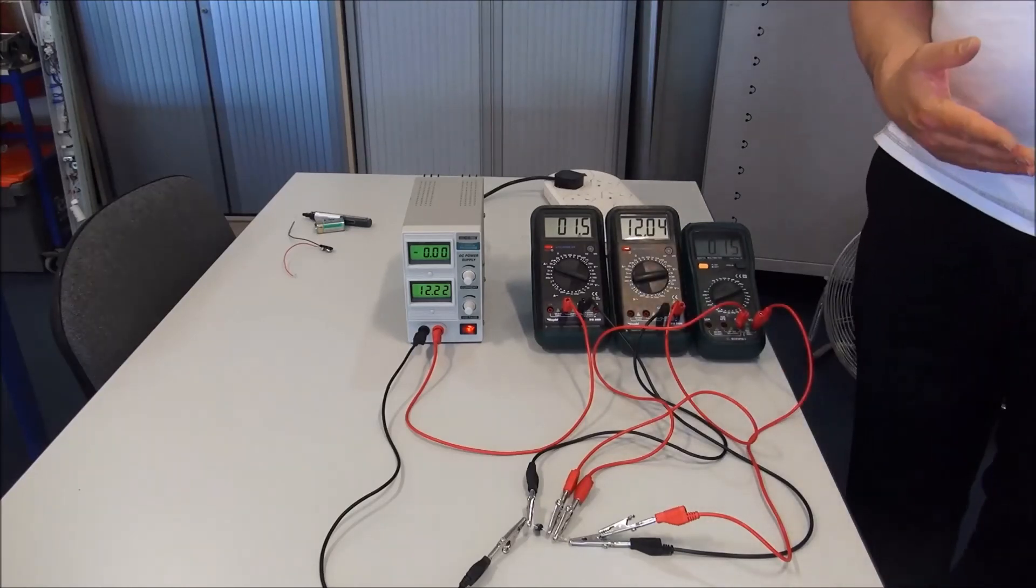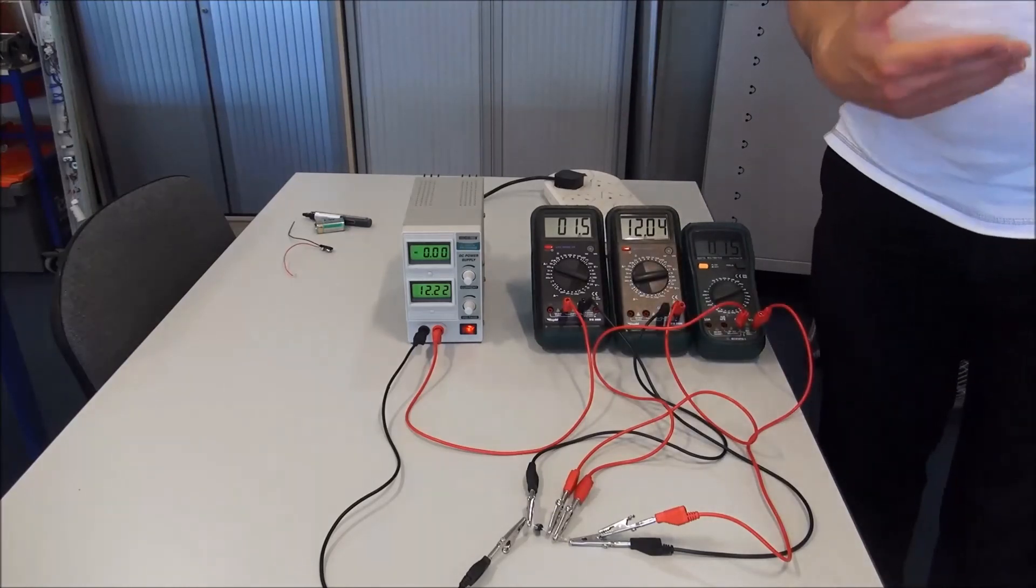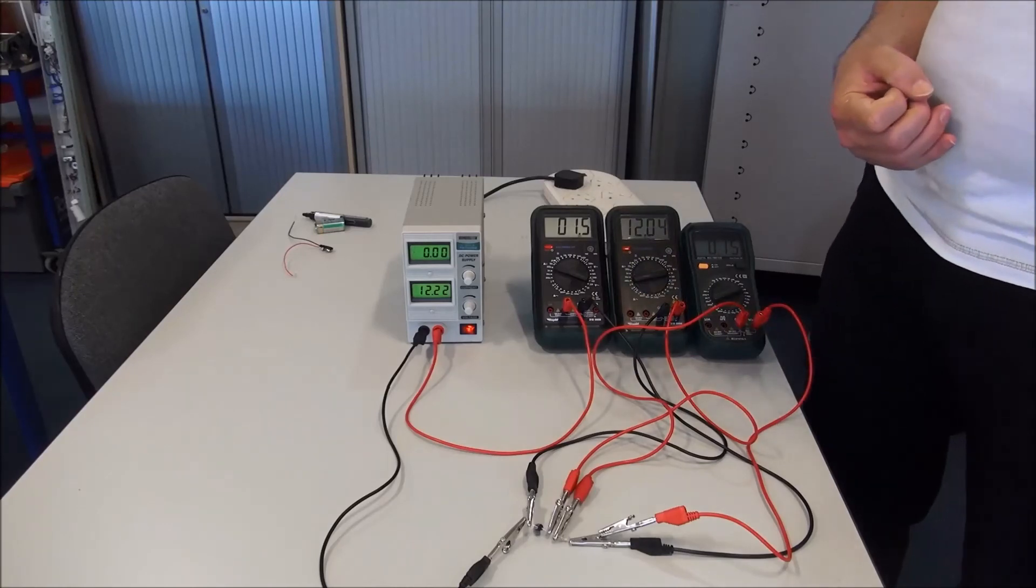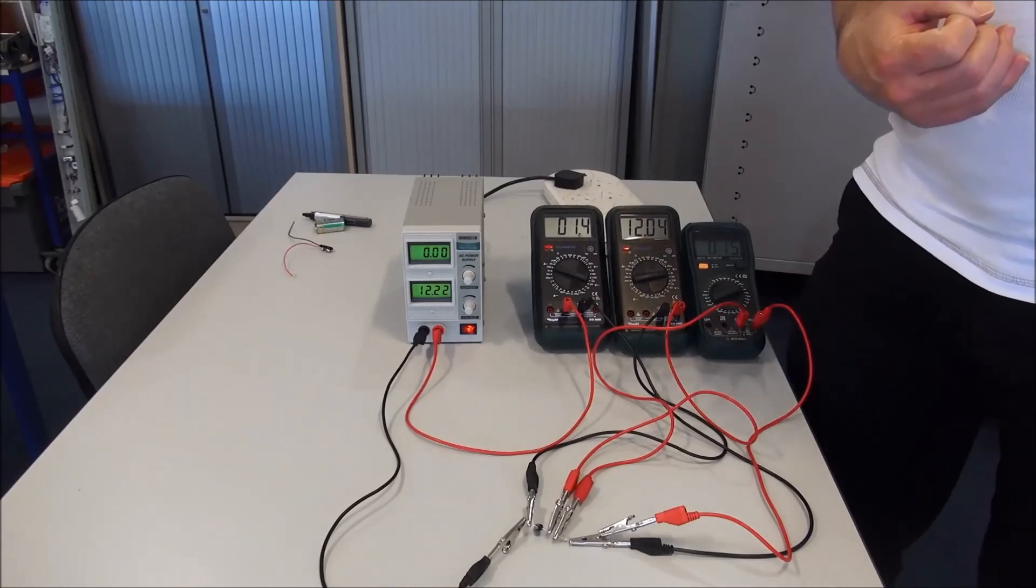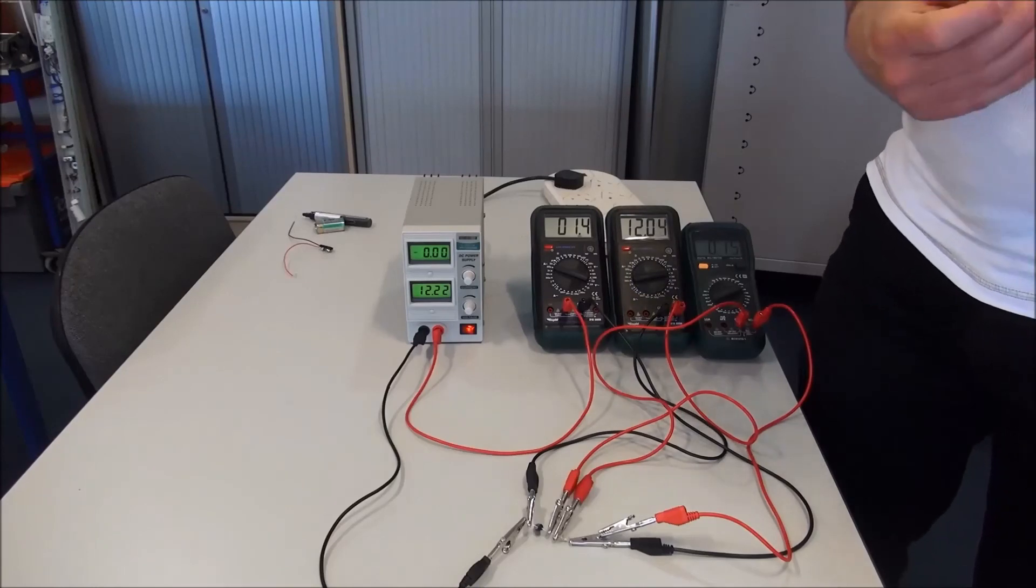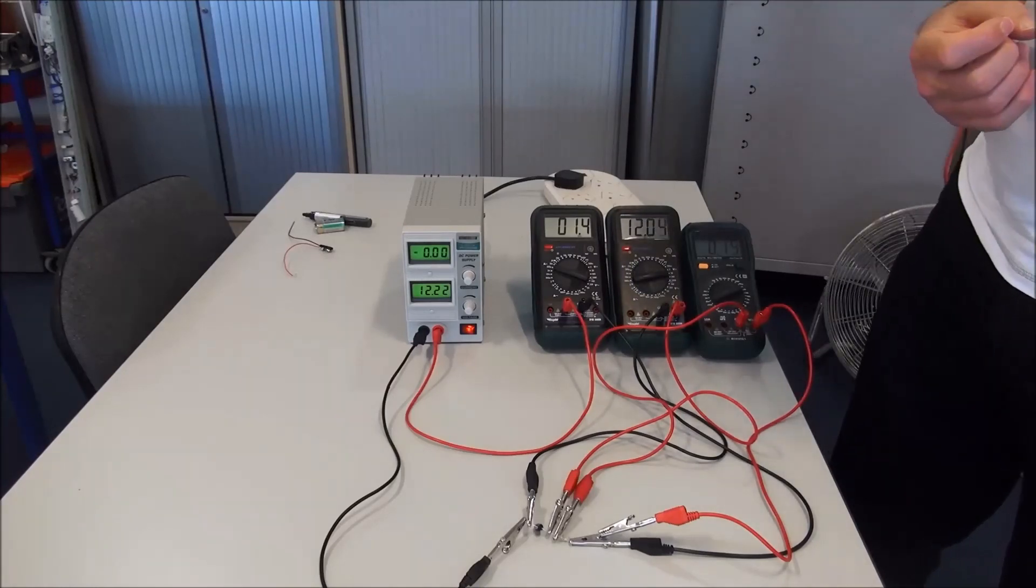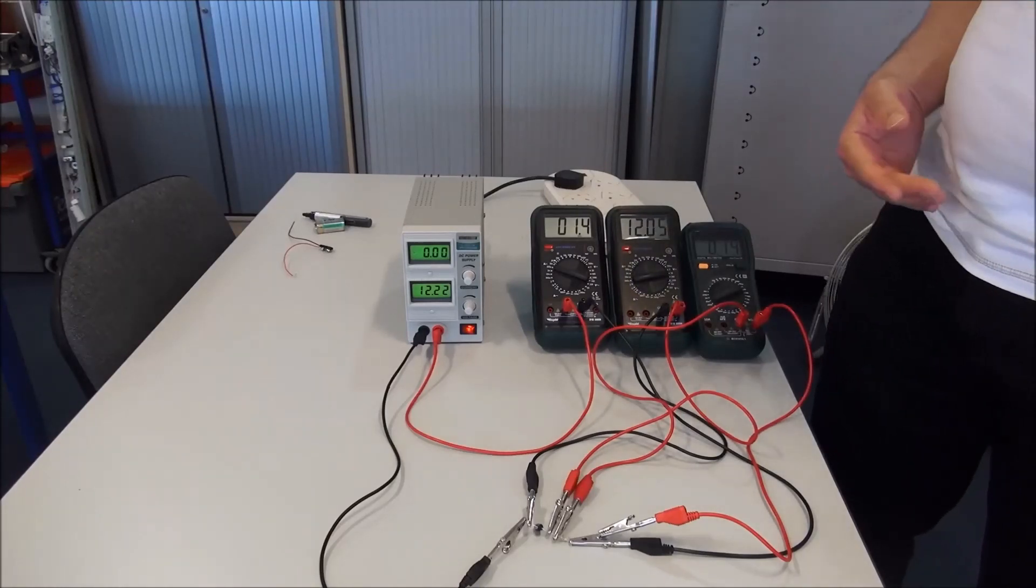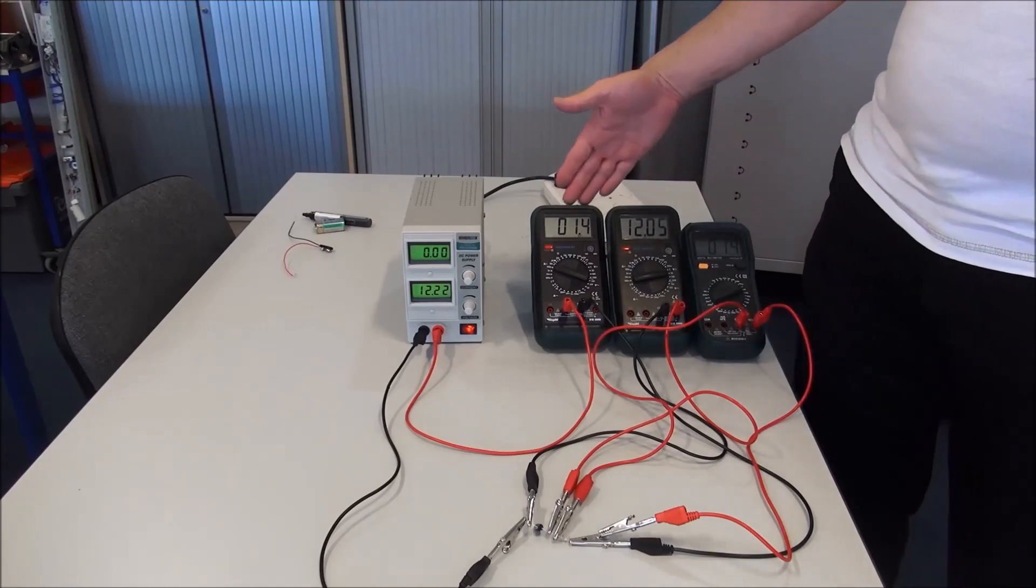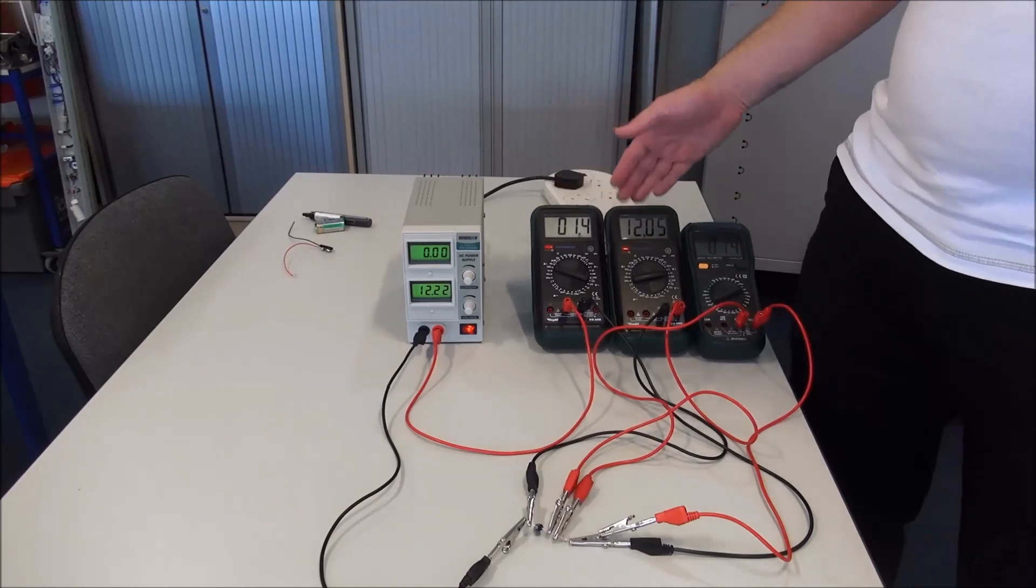Therefore, in a circuit that contains a capacitor, a DC circuit that contains a capacitor, after five time constants, we can say that virtually no current flows through the circuit. The only current that's flowing through this circuit is the current that is flowing through these meters.